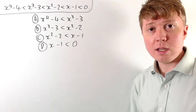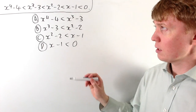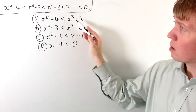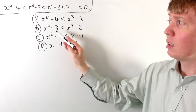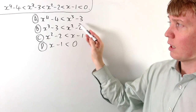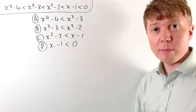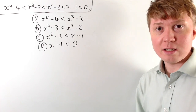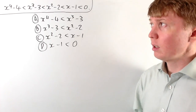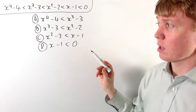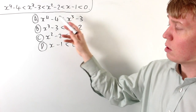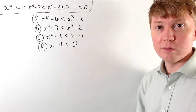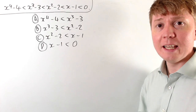We take the intersection of all these sets, and we automatically get that x to the 4 minus 4 is less than x squared minus 2, and similarly for all other pairings. So we just need to find the intersection of all the x values which satisfy each of these four inequalities.